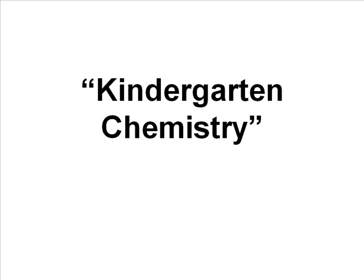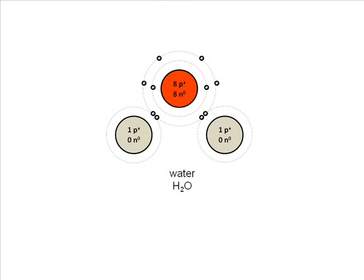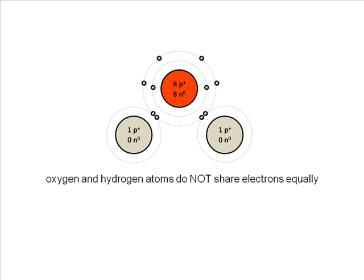Let's look at the water molecule from the last video. In this case, oxygen is an electron hog — it doesn't share equally with the hydrogens. Oxygen is sharing a pair of electrons with one hydrogen and a pair with the other hydrogen, but oxygen is holding those electrons more of the time, meaning the electrons spend more time near oxygen and less near hydrogen.